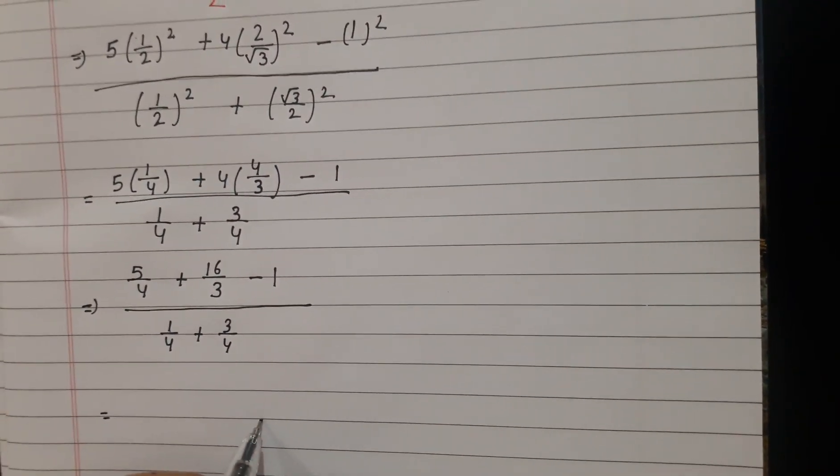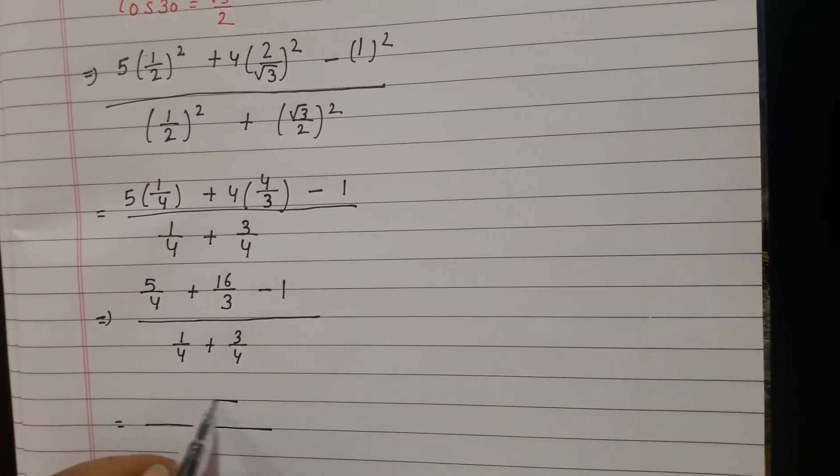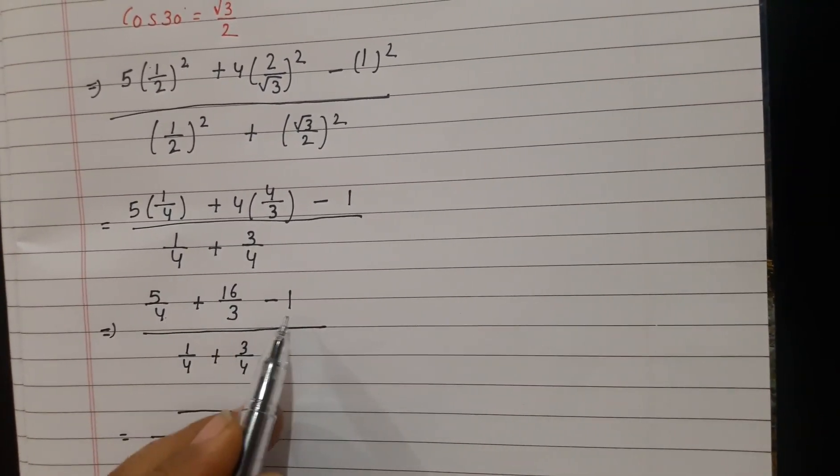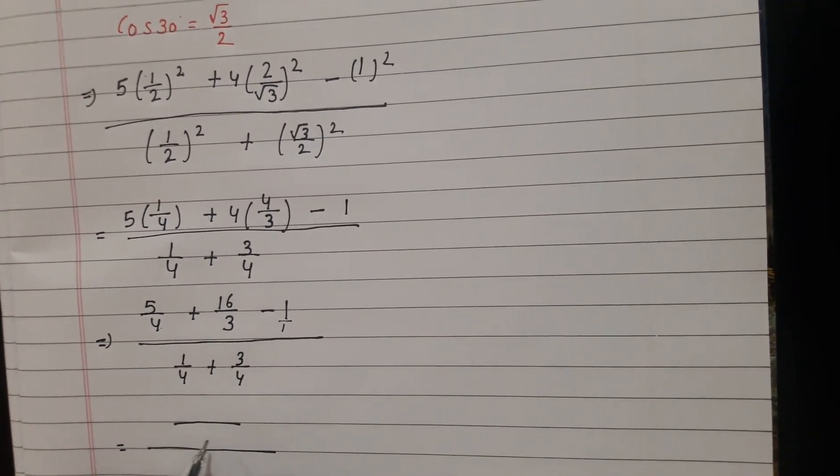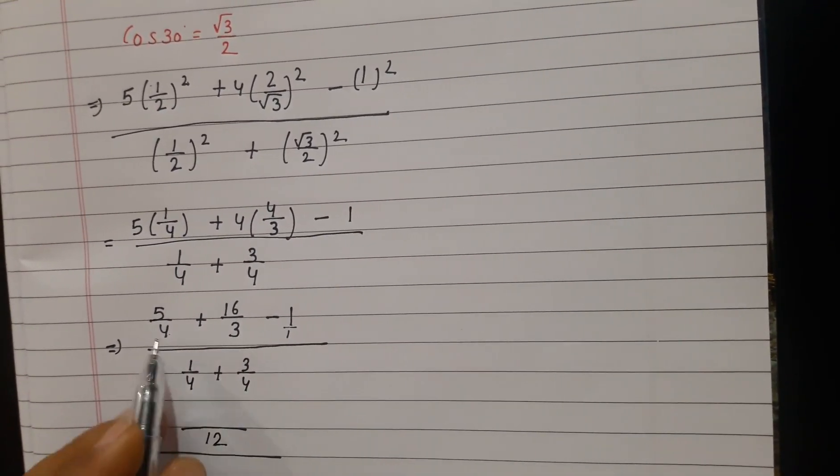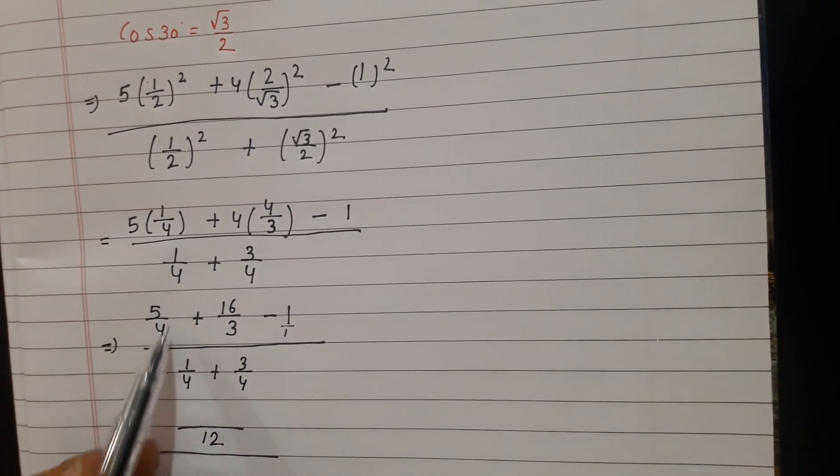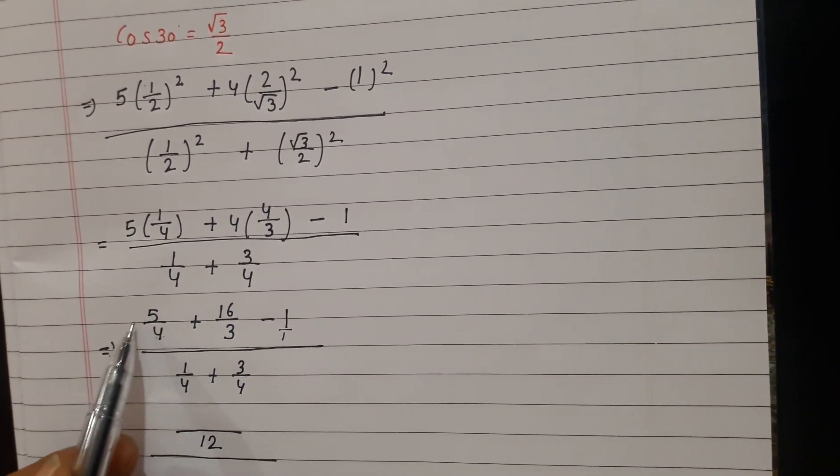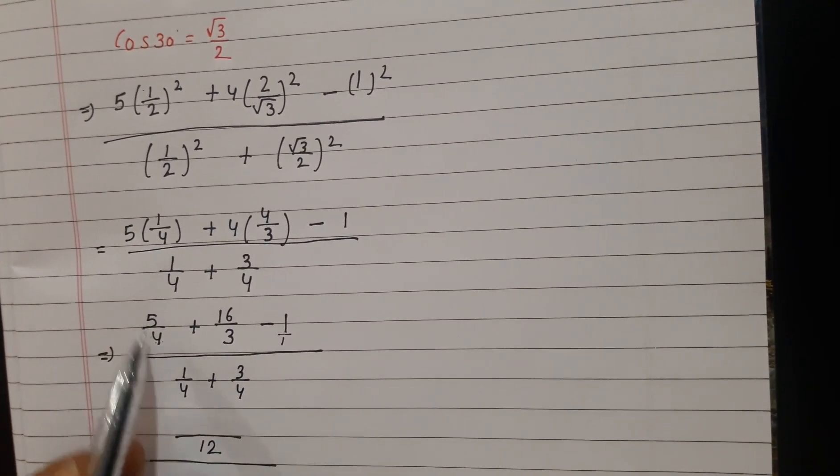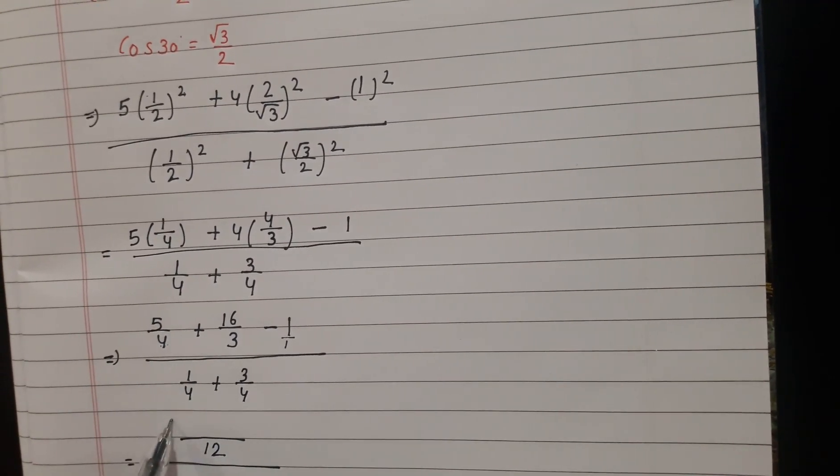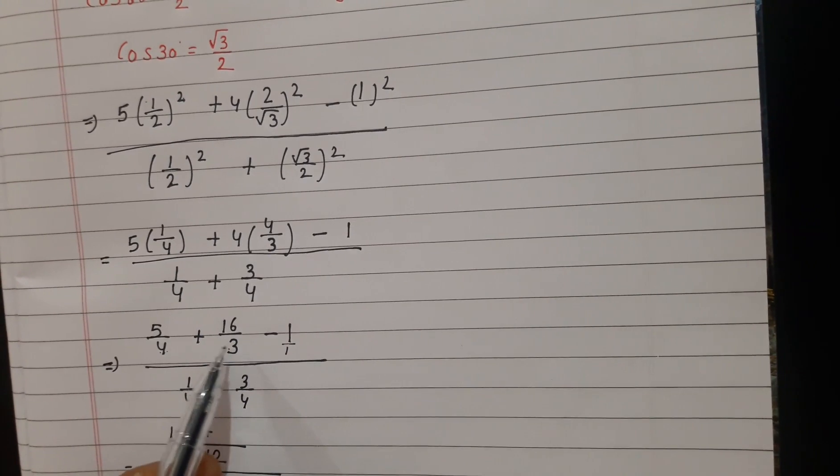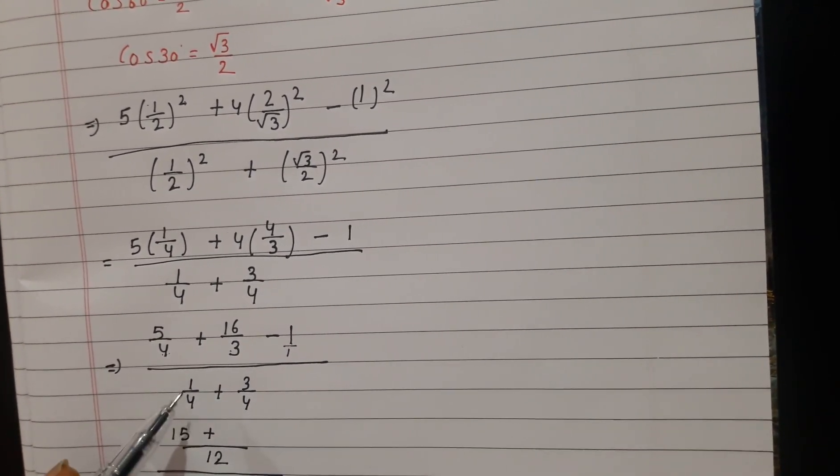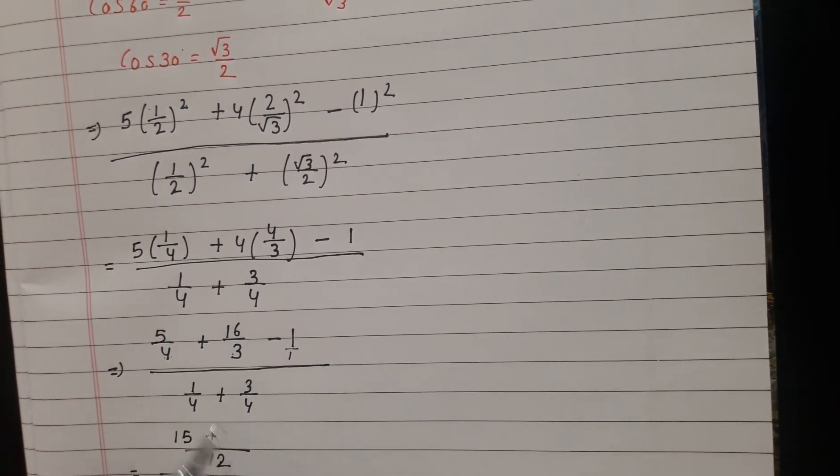Now we have to solve the numerator with LCM. First 4, 3, if 1 is important, the LCM will be 12. 4 into 3 is 12. Here there is 4 to make the denominator, we will multiply it with 3. So 5 into 3 is 15. 15 plus, 3 table 12 comes 4 times, so 16 into 4 is 64.